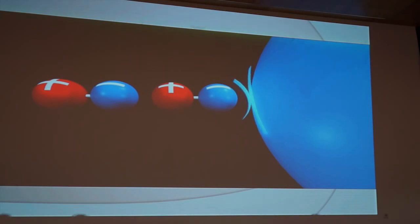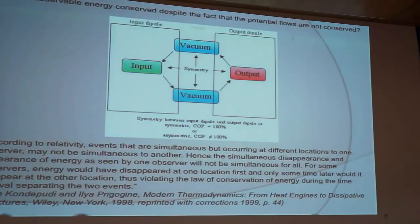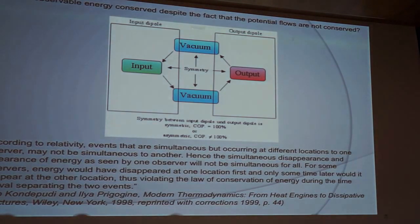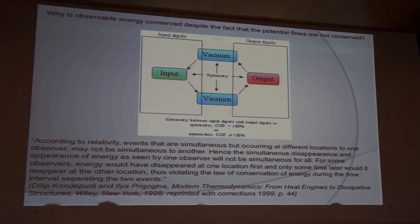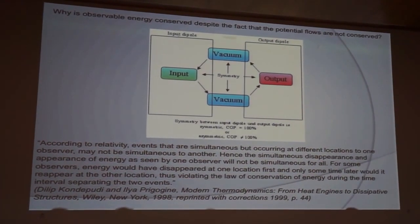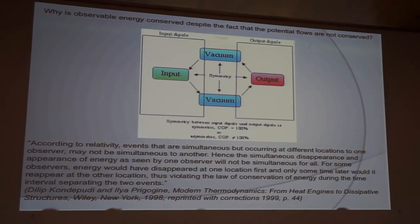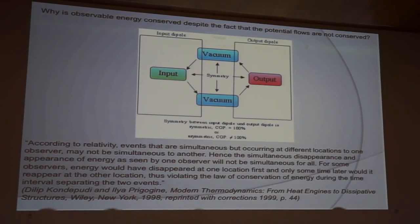This leads to the following basic question. Why is observable energy conserved despite the fact that the potential flows are not conserved? This picture shows the so-called self-symmetrizing process. The self-symmetrizing process explains the cause for the conservation of energy.